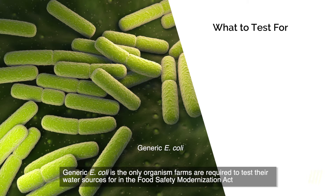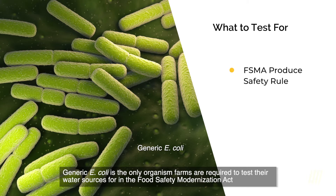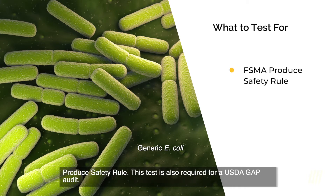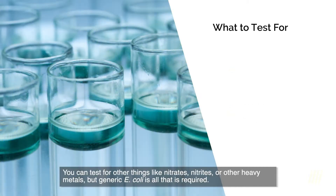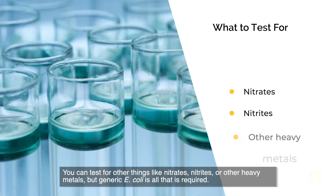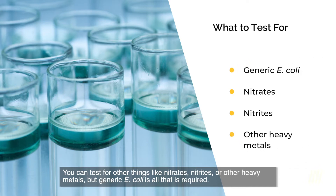Generic E. coli is the only organism farms are required to test their water sources for in the Food Safety Modernization Act Produce Safety Rule. This test is also required for a USDA GAP audit. You can test for other things like nitrates, nitrites, or other heavy metals, but generic E. coli is all that's required.